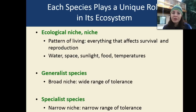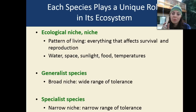Generalist species have a very broad niche, meaning they can survive in many different areas, such as a raccoon. They eat a very broad variety of food, so they can exist in many different areas. However, a specialist species has an extremely narrow niche — they can only exist in a very small area and have a very small range of tolerance, meaning they might be extremely sensitive to temperature or external factors such as weather or humidity.